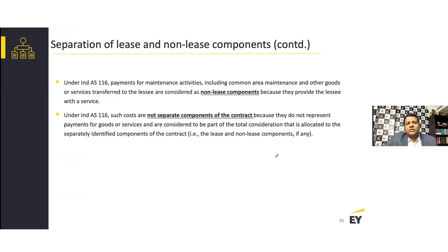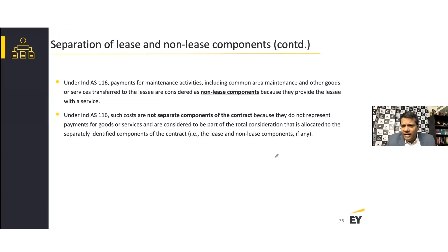Under INDAS 116, such costs are not separate components of the contract because they do not represent payment for goods or services. They are considered part of the total consideration that is allocated to the separately identifiable components — that is, the lease and non-lease components. You then need to allocate fair value to maintenance and to the lease, and we will help understand this with an example of how to identify and separate lease and non-lease components in a contract.